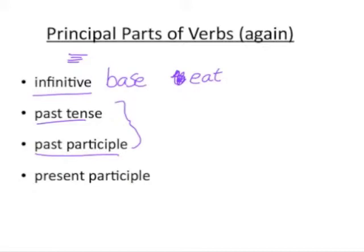The past tense and the past participle — with a completely regular verb we form them by adding -ed to the infinitive. But there are many irregular verbs in English that you just have to memorize. 'Eat,' for example: the past tense is 'ate' and the past participle is 'eaten' — not 'eated.'